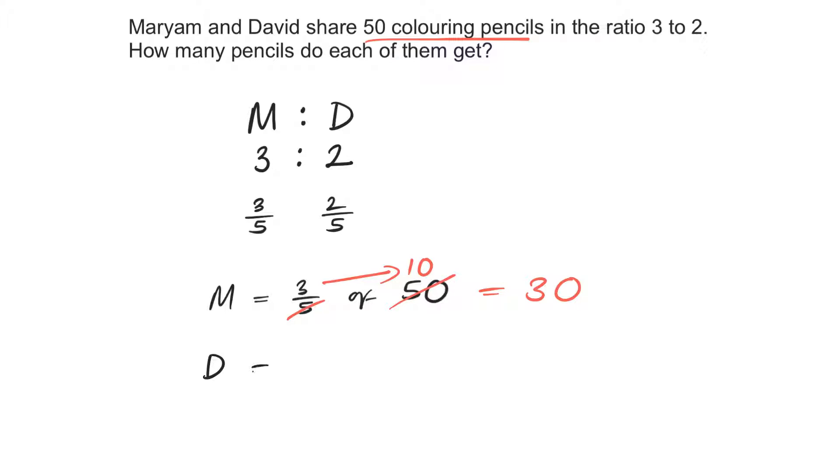And for David, David gets 2 fifths of the 50 colouring pencils. So, once again, 50 divided by 5 is 10. 10 times 2 is 20. So, David will get 20 colouring pencils.